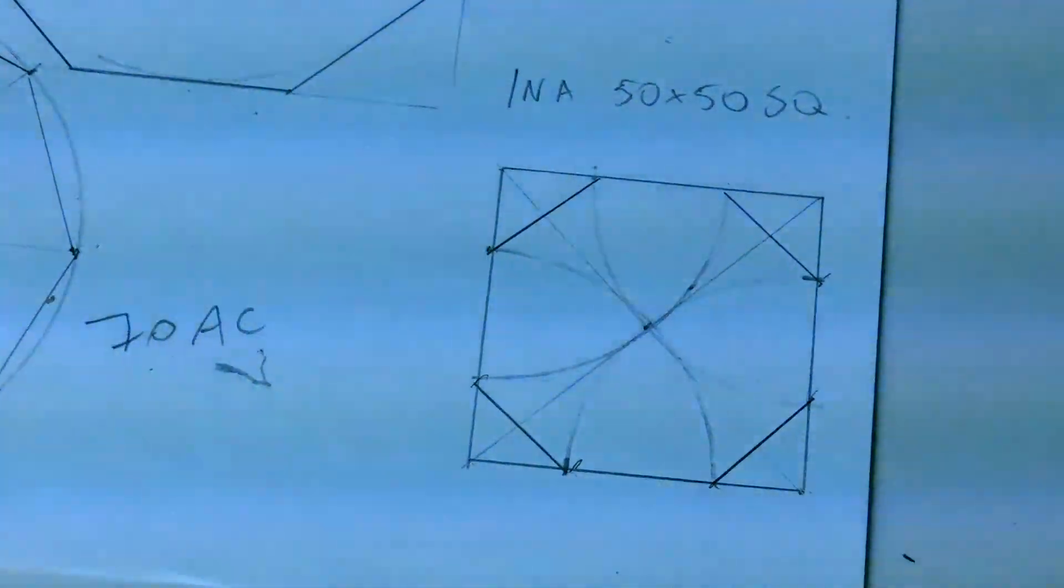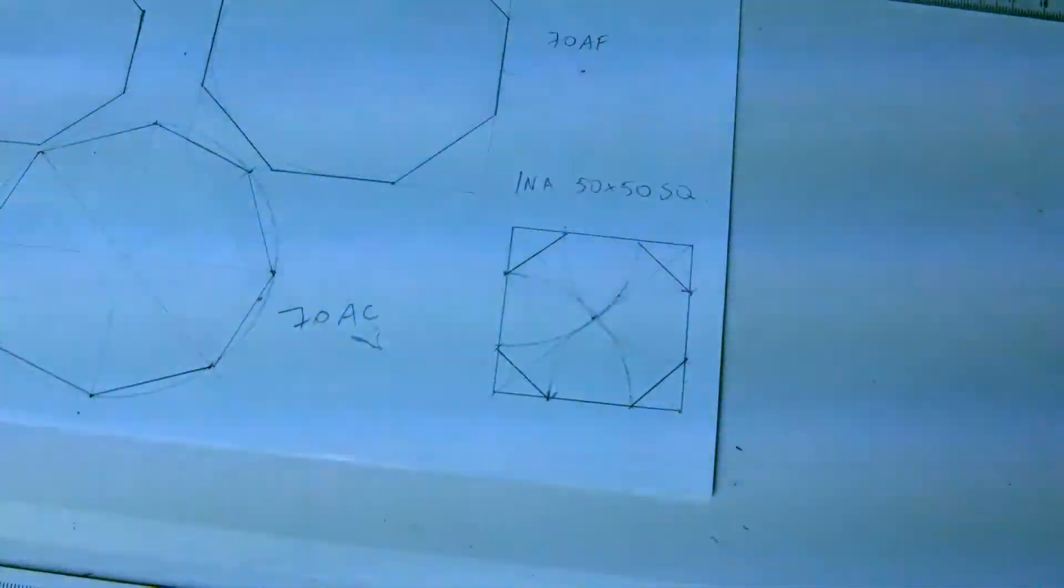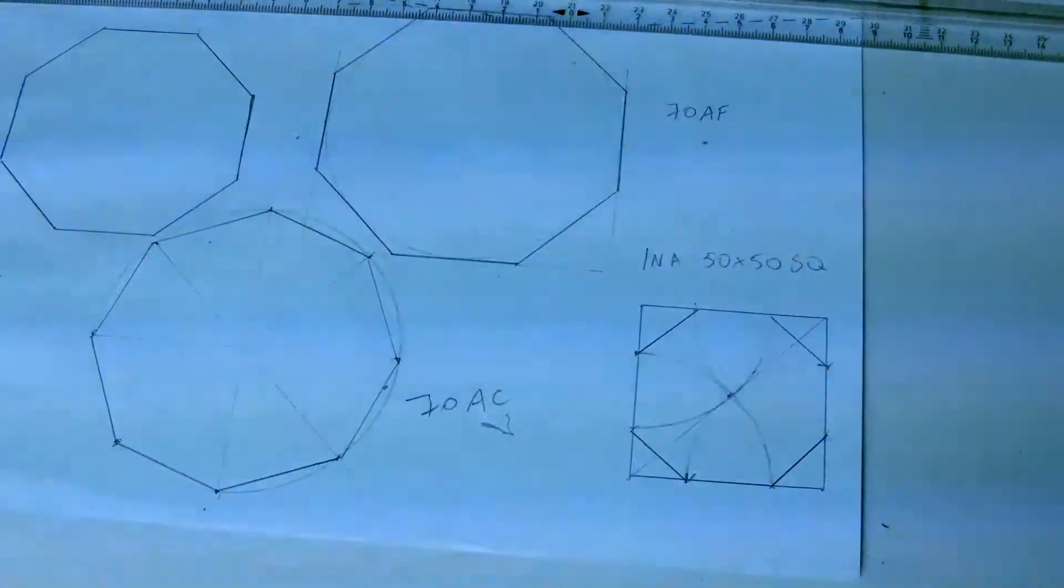So those are the constructions for an octagon, four different constructions for the octagon.